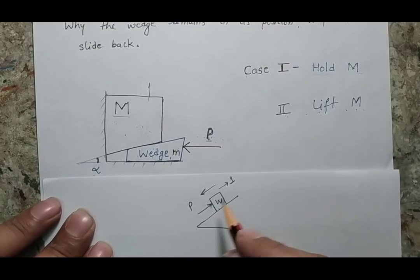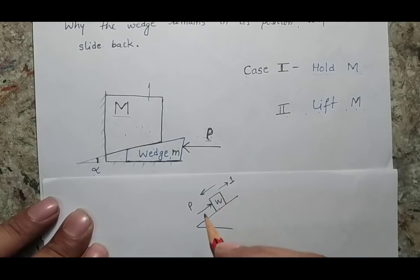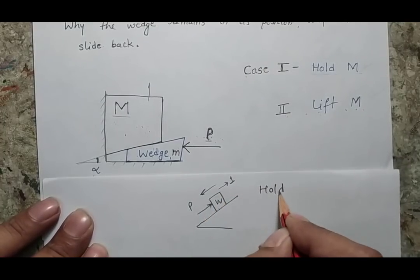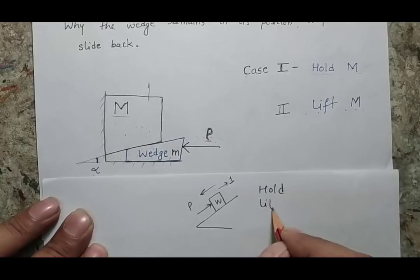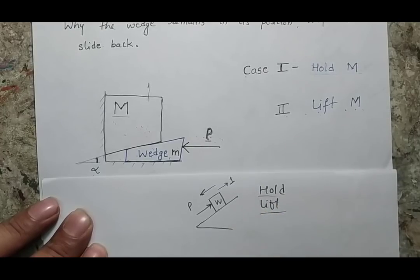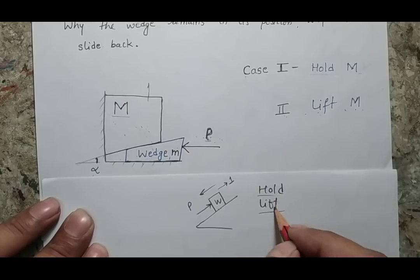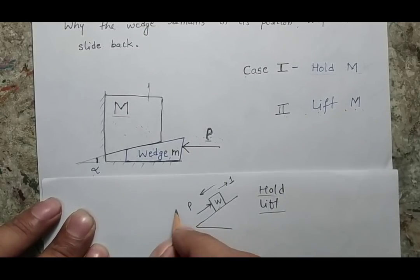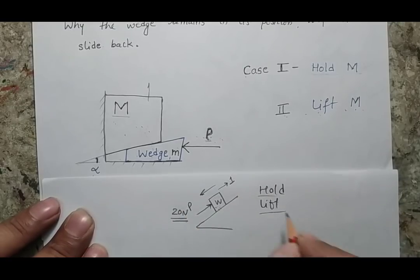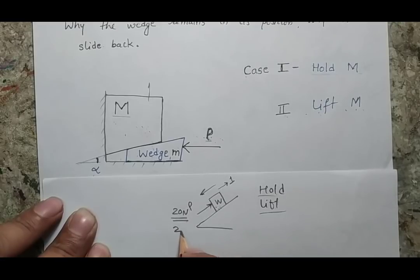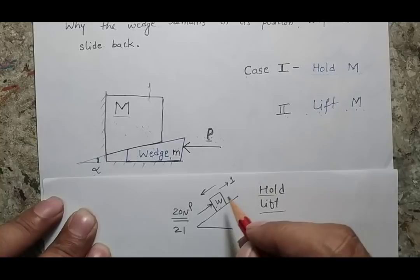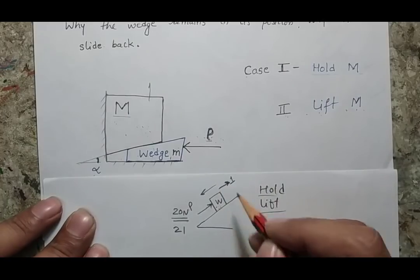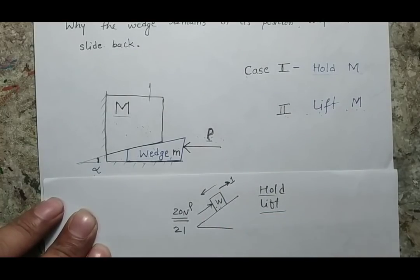These two forces — one to hold the body, another to lift the body — will not be the same. Between these two forces, the body will remain at its position. For example, by applying 20 Newtons the body remains in position, but if the force goes to 21 Newtons, it is not always essential that the body starts moving upward. Because of friction, when we are holding the body the friction acts in one direction, but when we try to lift the body the direction of friction changes and acts in the opposite direction.